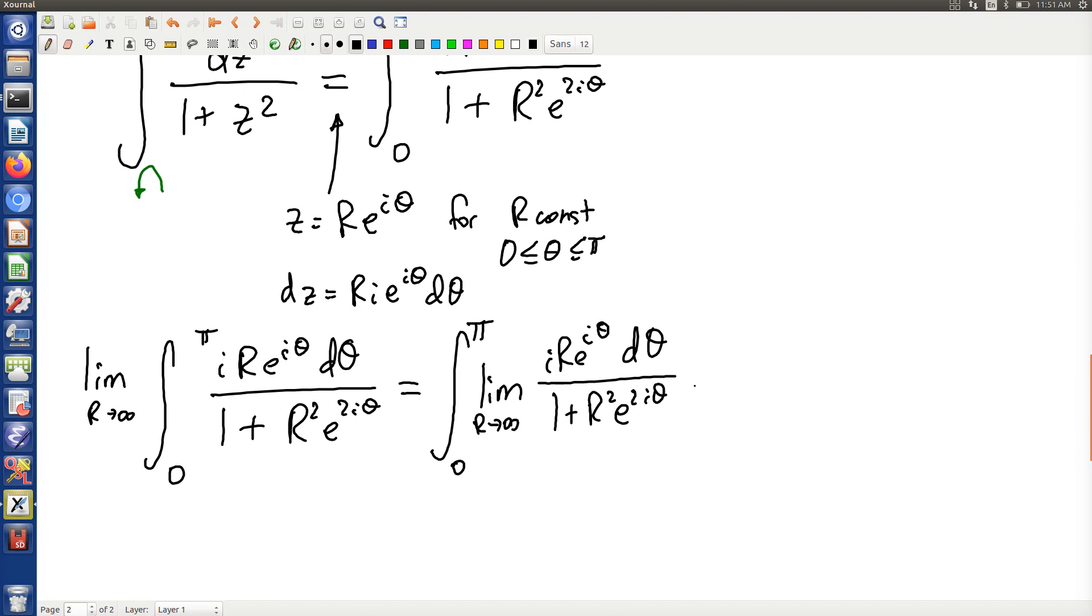You'll notice in magnitude, that 1 in the denominator doesn't really matter as r gets big. So this quantity here becomes something that looks like, well, I guess it looks like, the limit as r goes to infinity of i r e to i theta d theta r squared e to i theta.